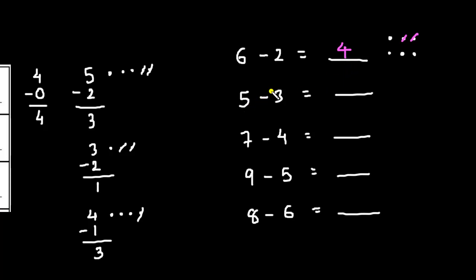Here we have 5 minus 3. So, 5 dots and to subtract 3, we will cut these 3 dots from here. So, now we have only 2. So, answer is 2.